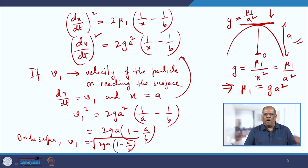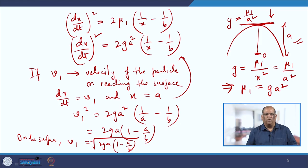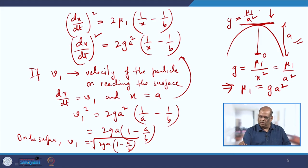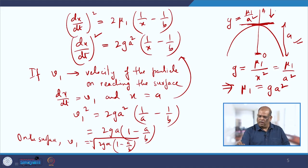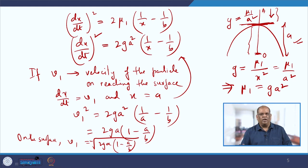Now if we ask what will be the velocity of the particle when it reaches the center O, we see how the equation of motion changes. There are two parts: the first is the particle falling from point A to the surface, the second from the surface to O. In the first region the inverse square law applies, and in the second the force varies linearly with distance.